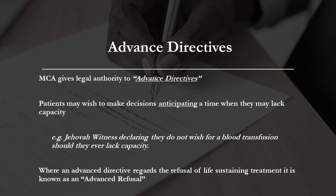Where a patient wishes to make an advanced decision regarding their care, in anticipation of a time in which they may lack capacity, the Mental Capacity Act supports this by providing the legal groundwork for advanced directives. Where this decision regards the potential refusal of treatment, this is known as advanced refusal. One common example is where a Jehovah's Witness declares that they would never wish to have a blood transfusion should they lose capacity and need one, even where such a refusal may result in end of life.